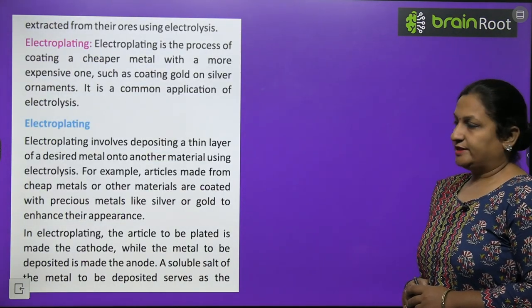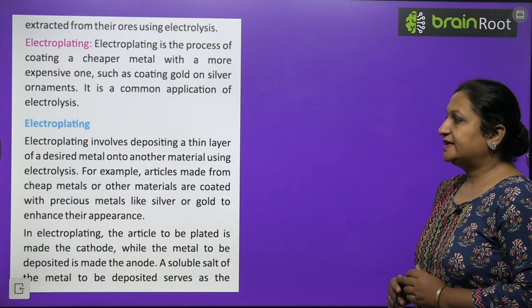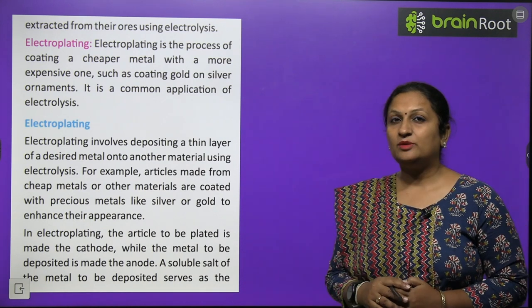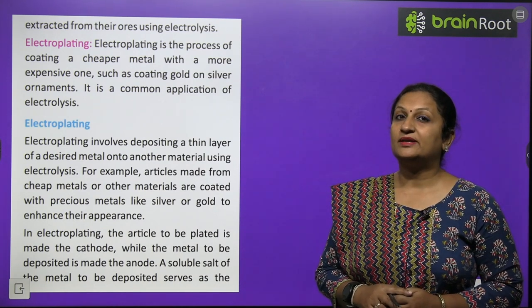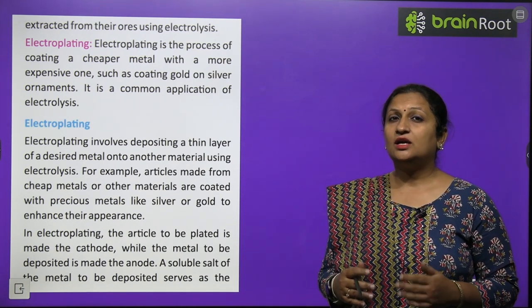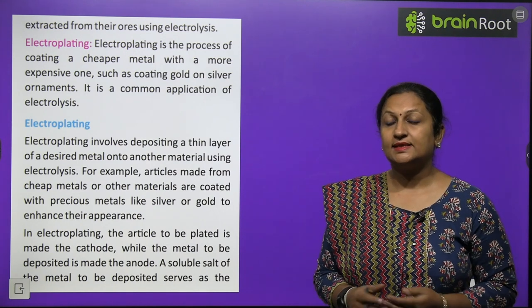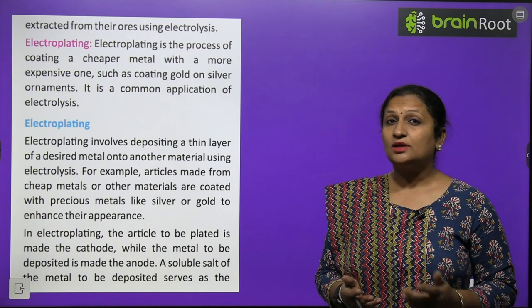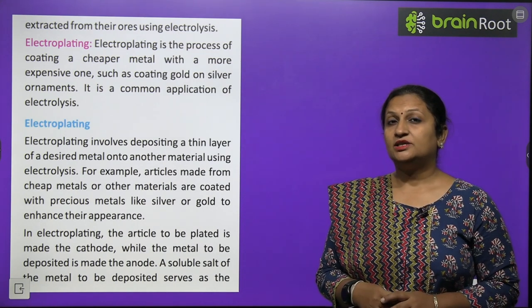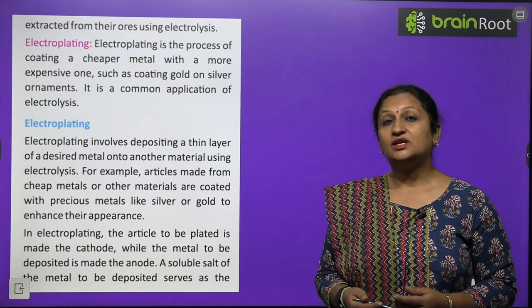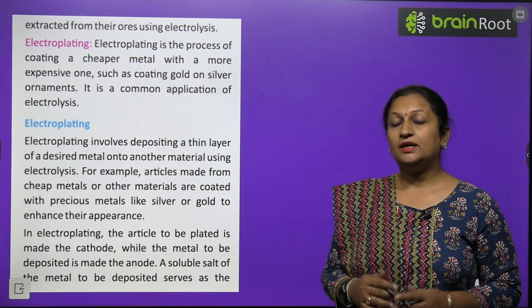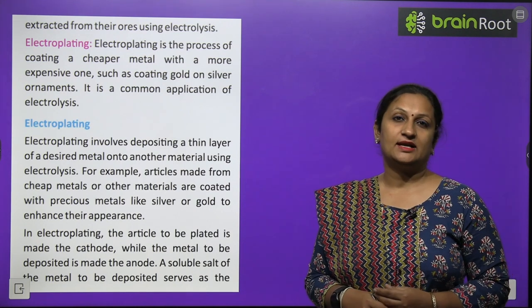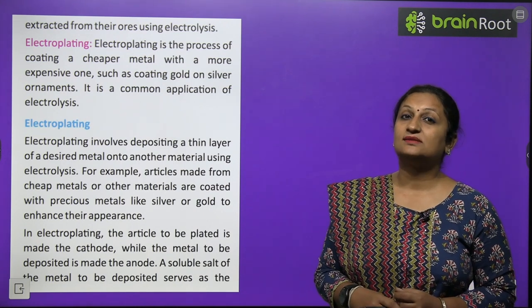Electroplating: in electroplating, we deposit one metal on another metal to enhance its life or appearance. For example, iron rusts easily, so we can electroplate zinc over iron — a process called galvanization. This protects the iron from rusting.